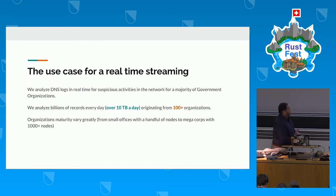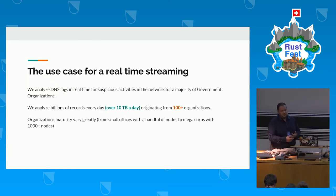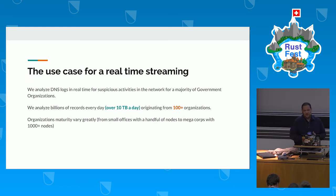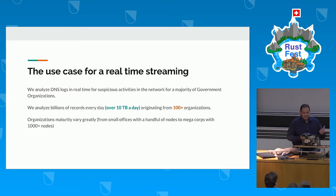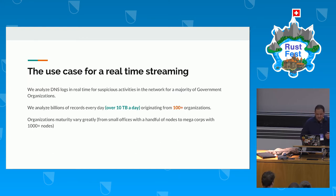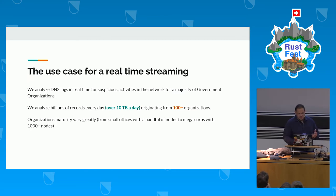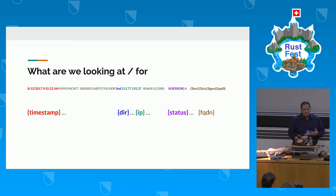We do real-time DNS log analysis for multiple government organizations — over a hundred government entities that vary greatly in their maturity level. Some are small offices with a handful of nodes, while others are megacorporations with 10,000 nodes and above. We process around 10 terabytes of DNS log data every day. We are mostly interested in DNS logs, not the entire network stream, because the DNS log itself contains a lot of interesting information you can use to infer a lot of activity going on in the network.